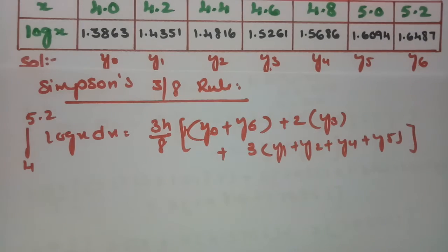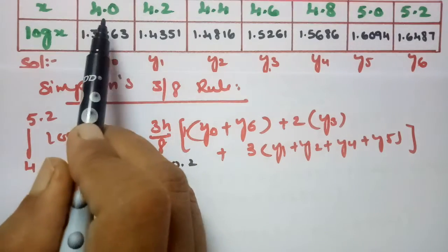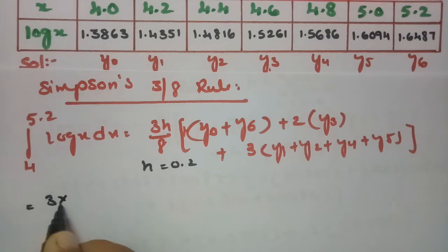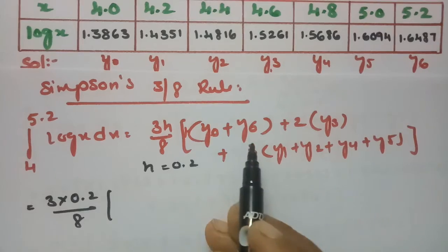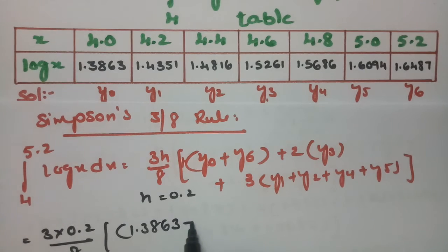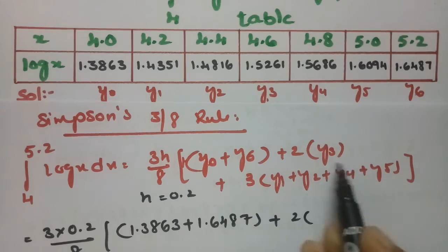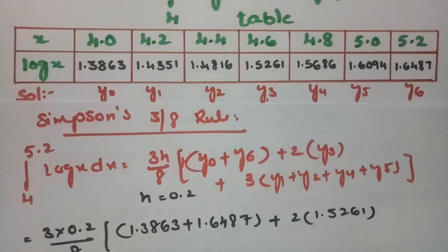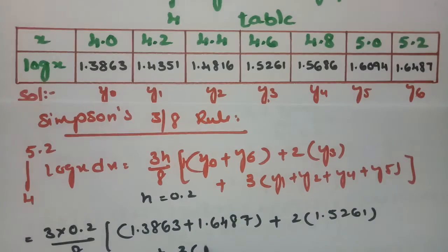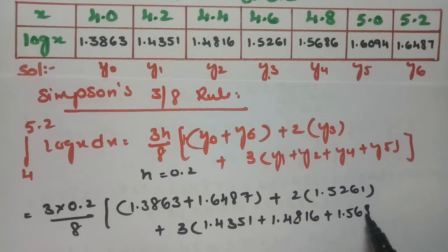Now substituting all values. h = 0.2, so 3 × 0.2 / 8 = 0.6/8. The first value is y0 = 1.3863, last value y6 = 1.6487. Then 2 times the multiple of 3: y3 = 1.5261. Then 3 times the remaining ordinates: y1 = 1.4351.